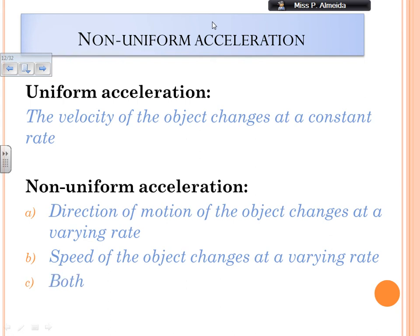Remember that acceleration is when I have the change of my velocity over a period of time. But it can happen always by the same amount, the same rate. If I have not always in the same rate, then my acceleration is not uniform, and it could be even the same speed, but changing the direction at a different rate, varying rate, or changing the speed at varying rate, or both.